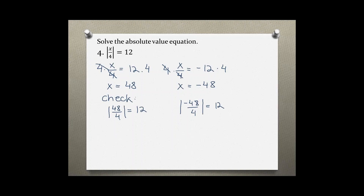Solving the first: 48 over 4 is 12, and the absolute value of 12 is still positive 12, which is a true statement — so this solution checks out. For the second: negative 48 divided by 4 gives negative 12 inside the absolute value bars, and taking the absolute value of a negative number always comes out positive. So 12 equals 12 is a true statement.